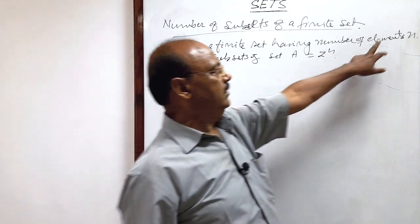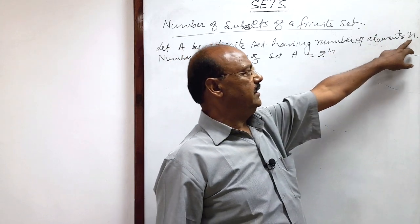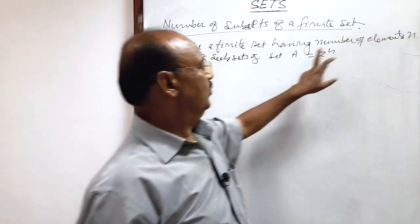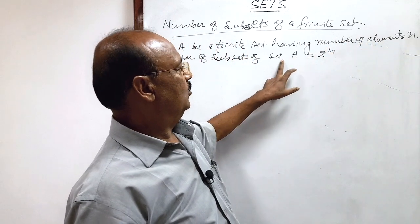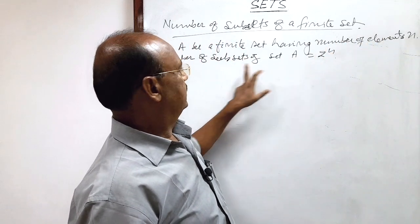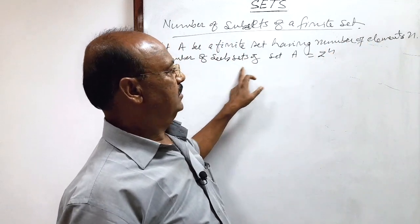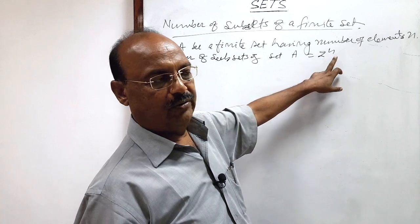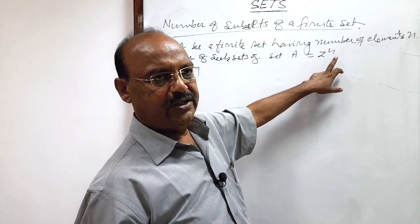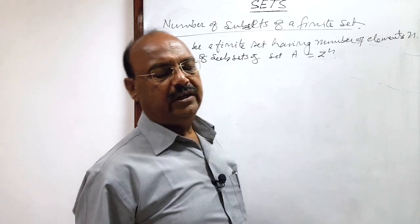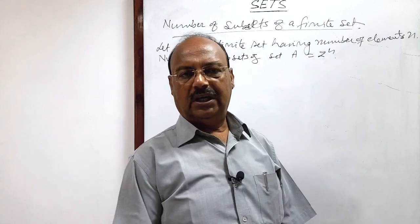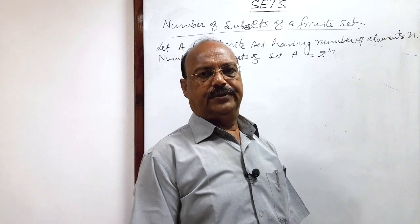If number of elements in a set A is n, then the number of all possible subsets of set A will be 2 to the power n. We can understand this with the help of the formula of combination.